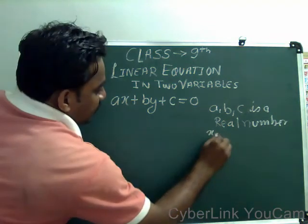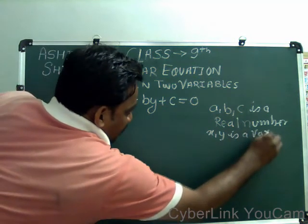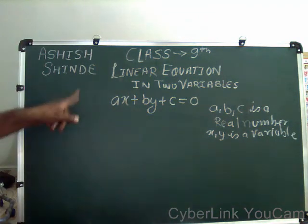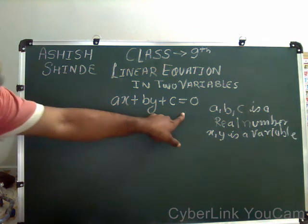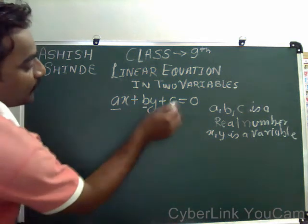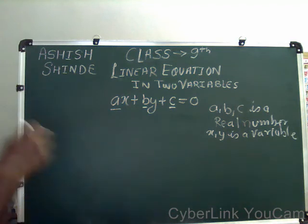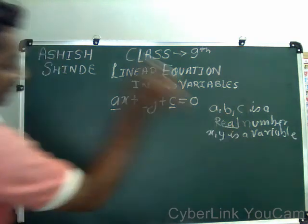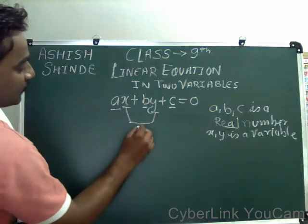And X, Y are variables. A, B, C are real numbers — real numbers may be 1, 2, minus 2, minus 4, under root 3, under root 5 — all are called real numbers. X and Y are the 2 variables.